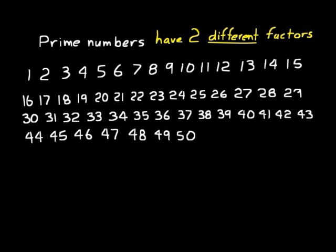You might want to review divisibility rules, which help us figure out the factors of a number. If it's divisible by 2, the last digit is even. If it's divisible by 5, the last digit is 0 or 5. If it's divisible by 10, the last digit is 0. You can also use the sum-of-digits test: if the digits add up to 3, it's divisible by 3; if they add up to 9, it's divisible by 9.